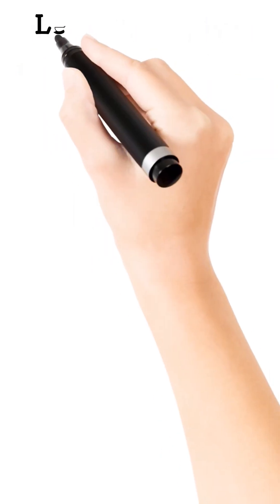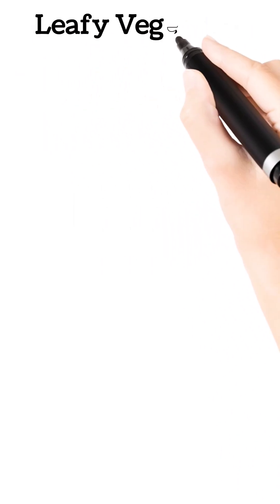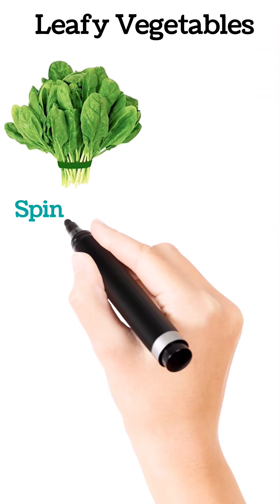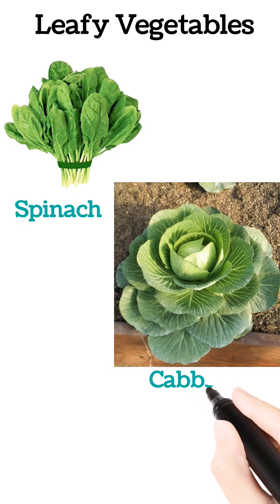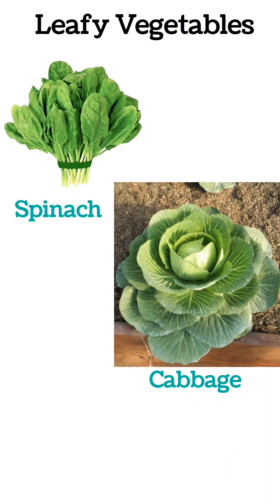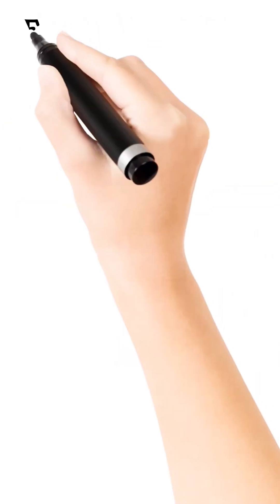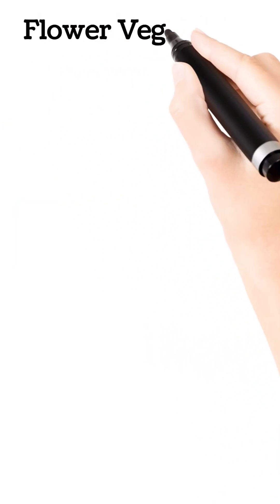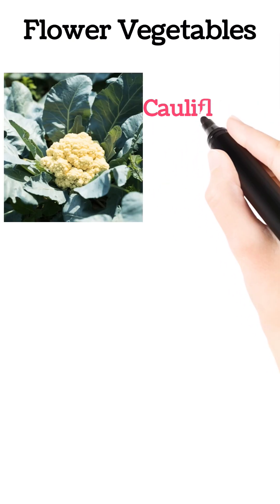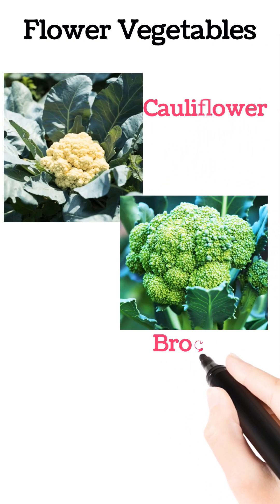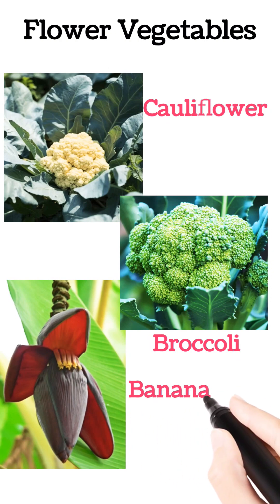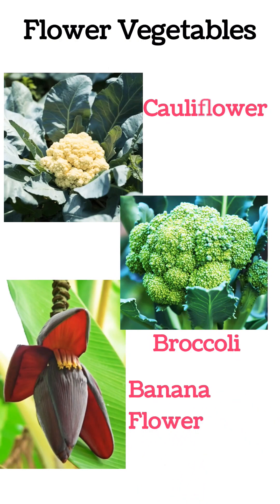Leafy vegetables. Leaves that we eat include spinach and cabbage — yes, cabbage is a leaf. Flower vegetables: the flowers that we eat include cauliflower, broccoli, and banana flower.